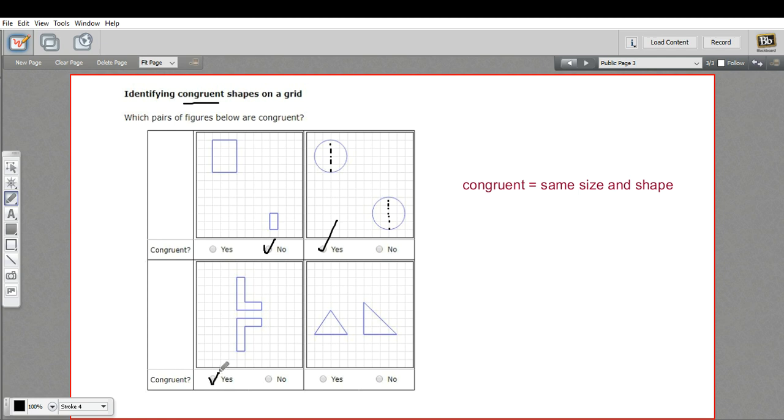And here we have two triangles. I can tell already they're definitely not the same shape—this one has a right angle and this one doesn't, so these are not congruent. So that's a little bit of work with identifying congruent shapes on a grid.